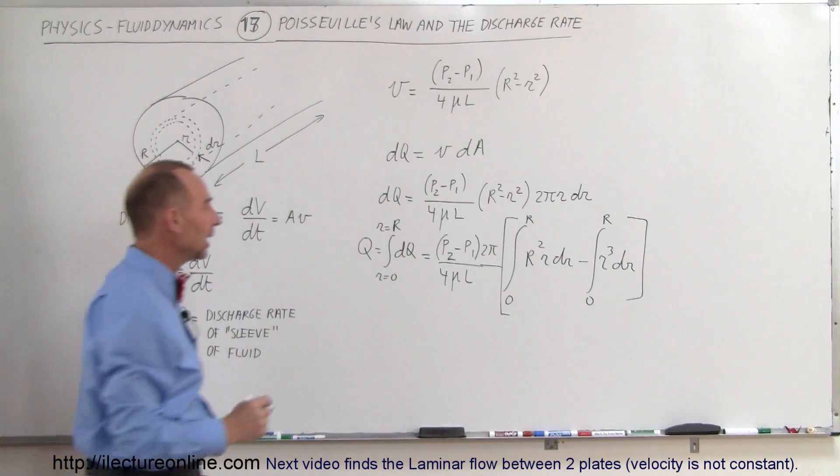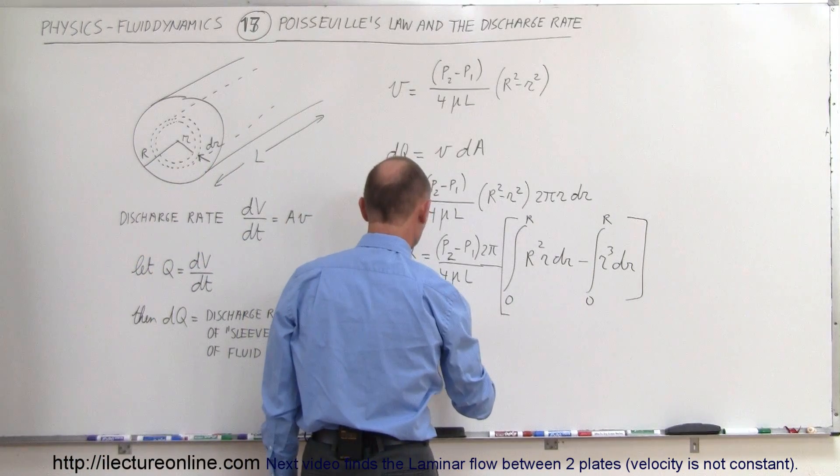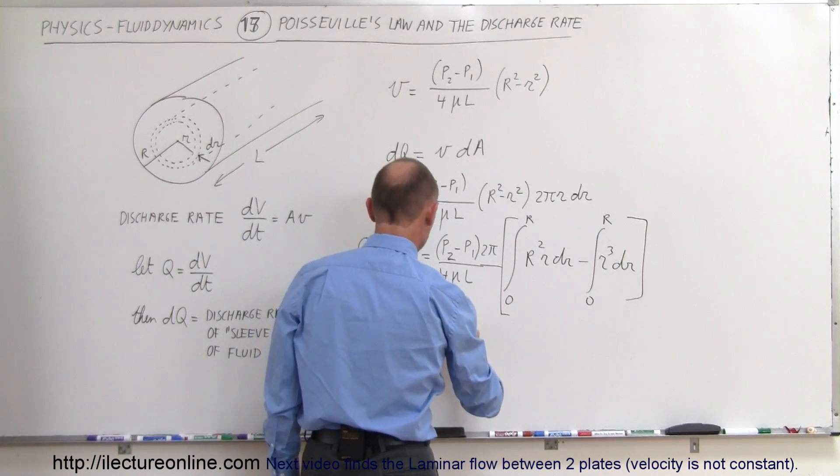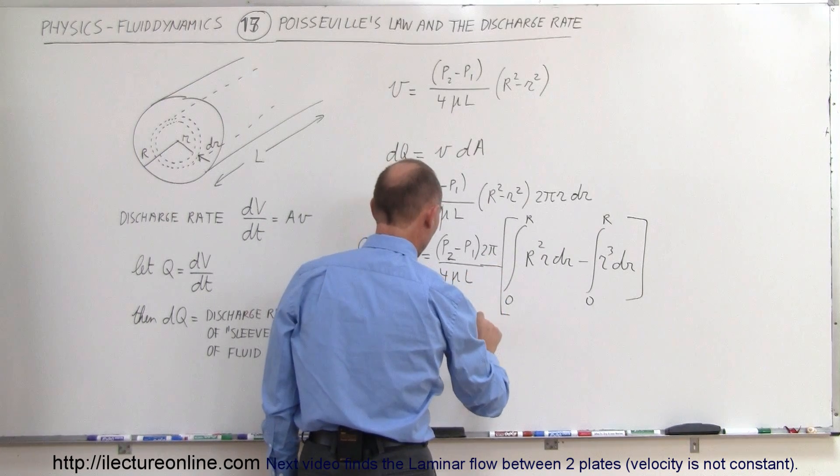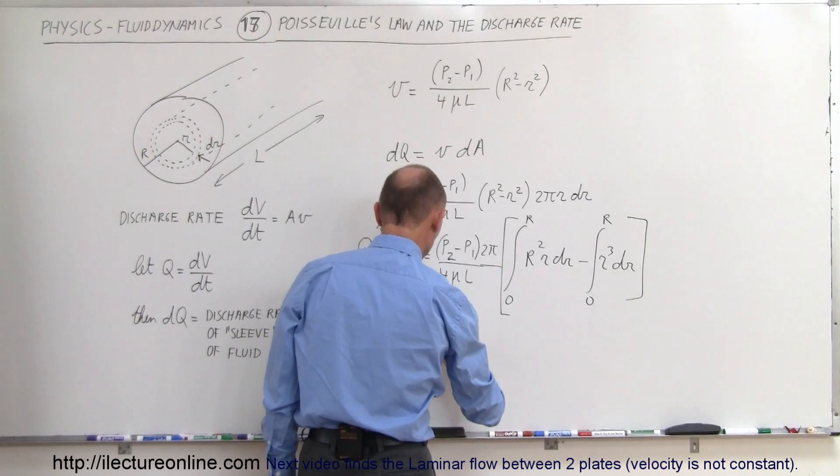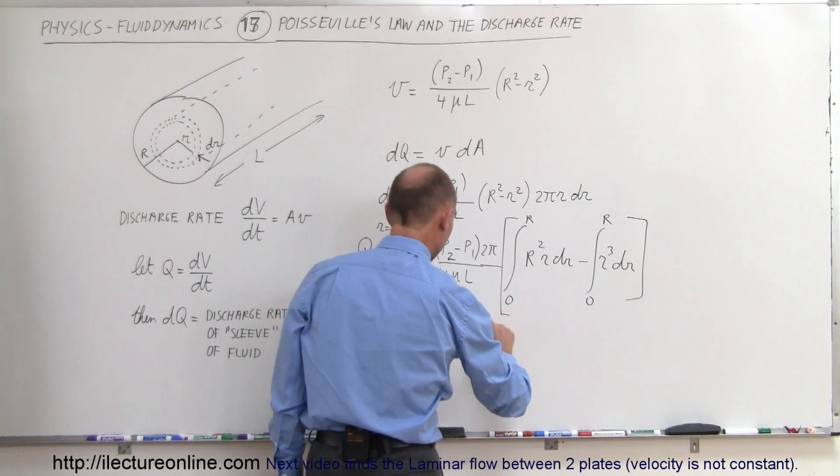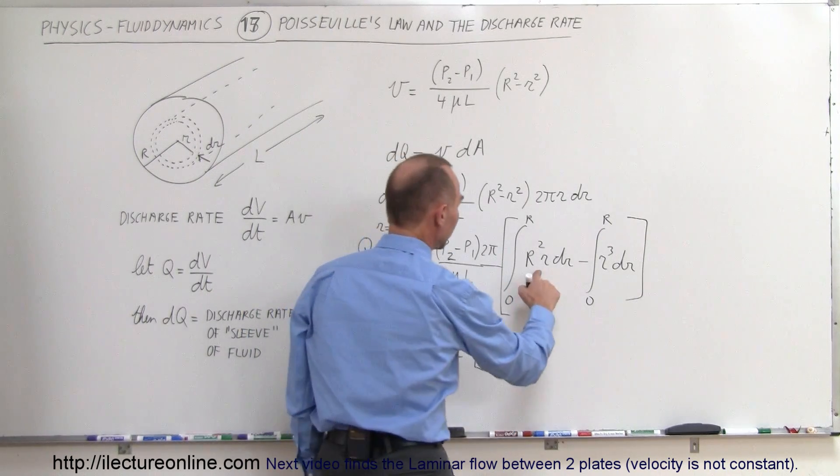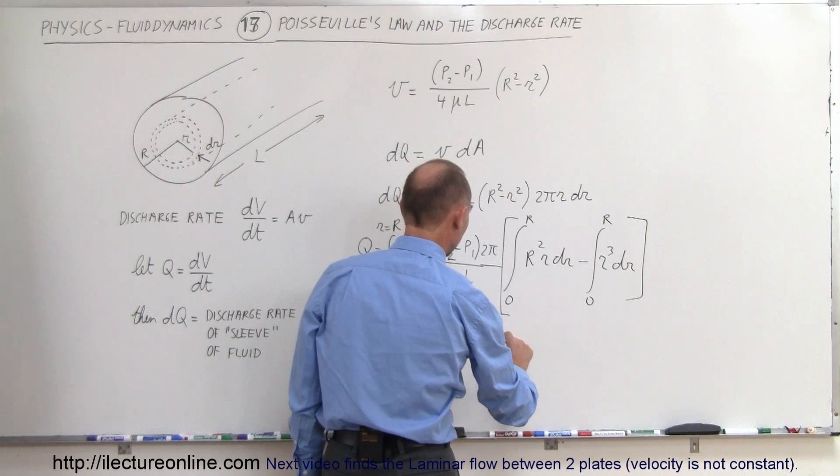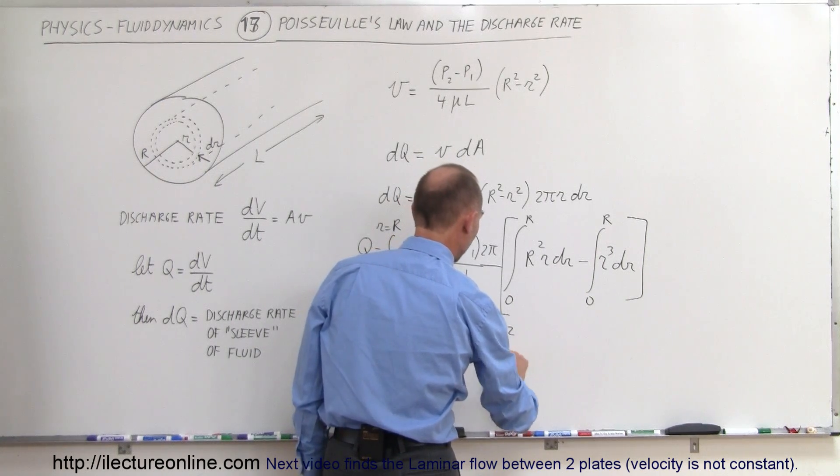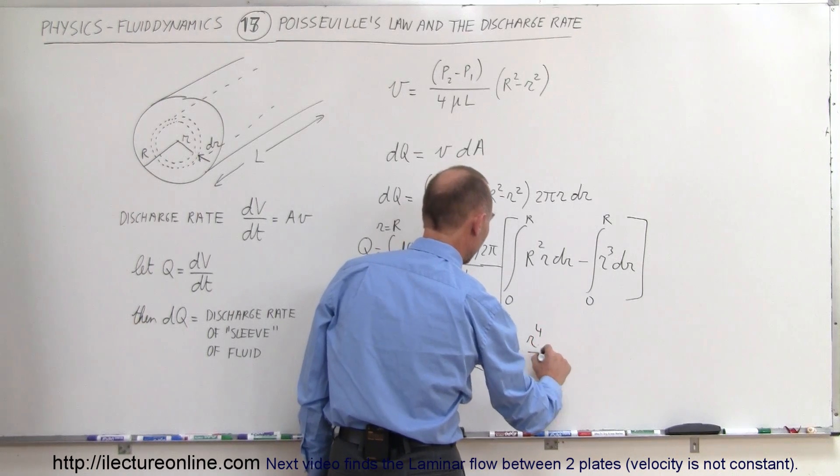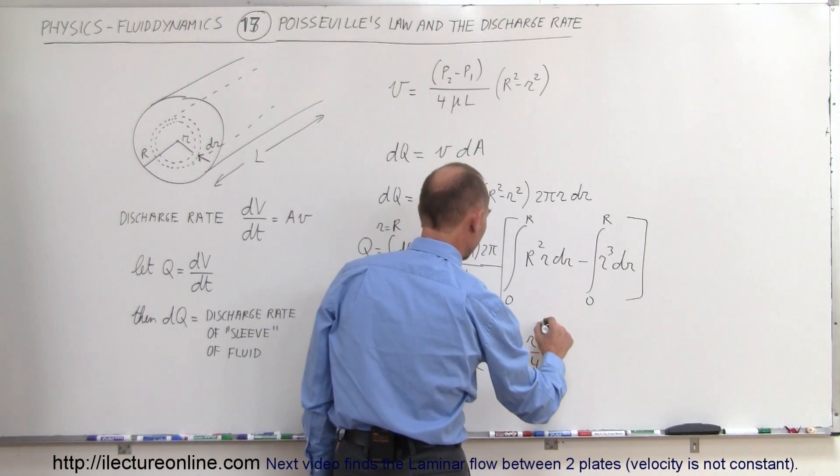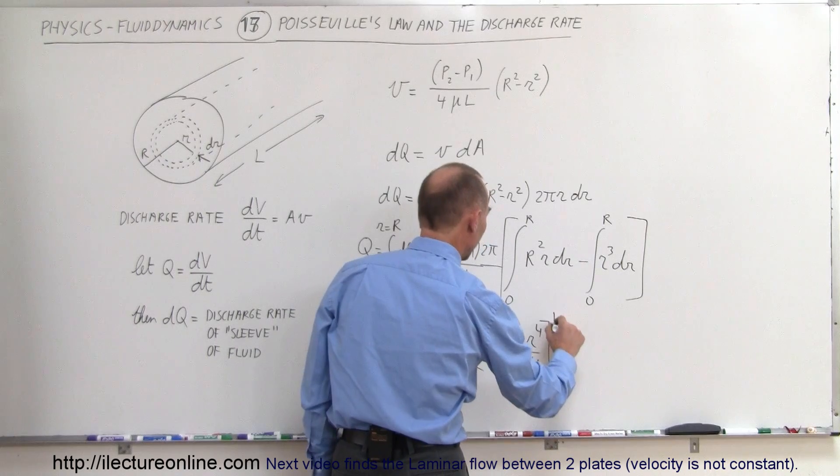Let's go ahead and do that, and see what we get. So this is equal to p2 minus p1. The 2 and the 4 cancel out, so we have a pi in the numerator, and we'll end up with 2 mu L in the denominator. And when we integrate this, we'll end up with an r squared, little r squared, divided by 2, minus little r to the 4th power divided by 4, and then both will be evaluated from 0 to r.